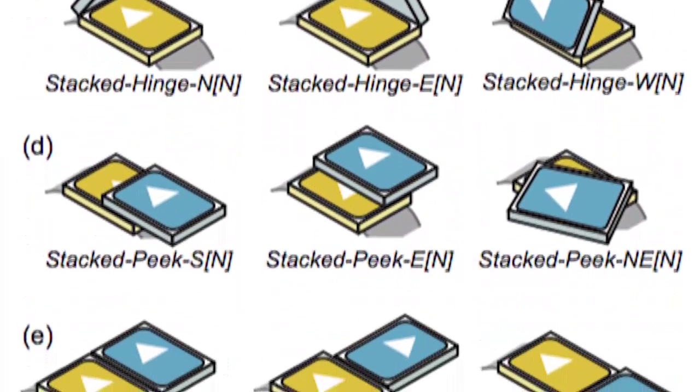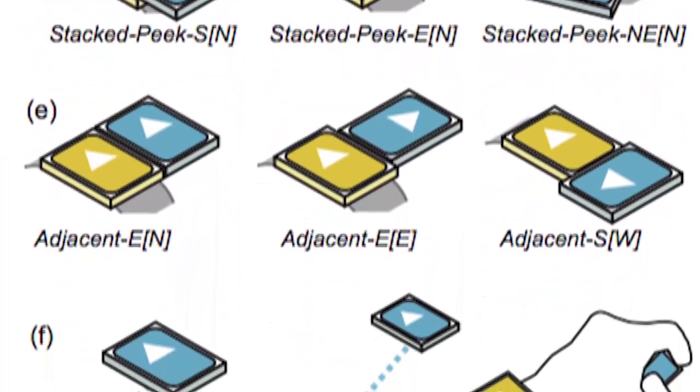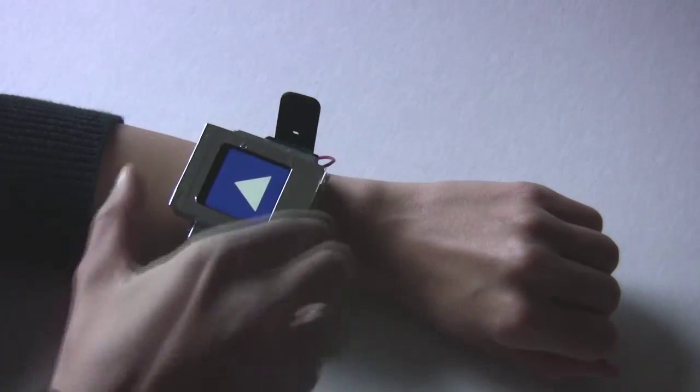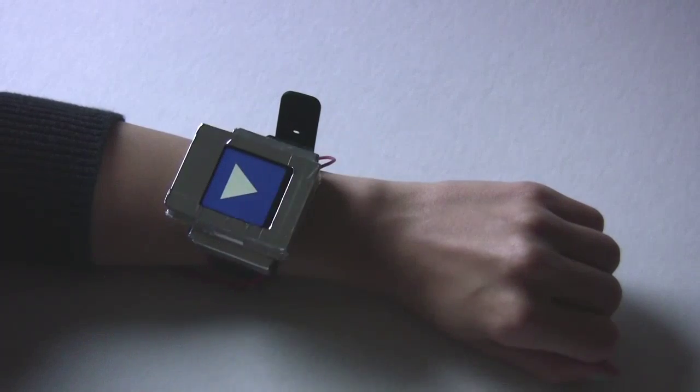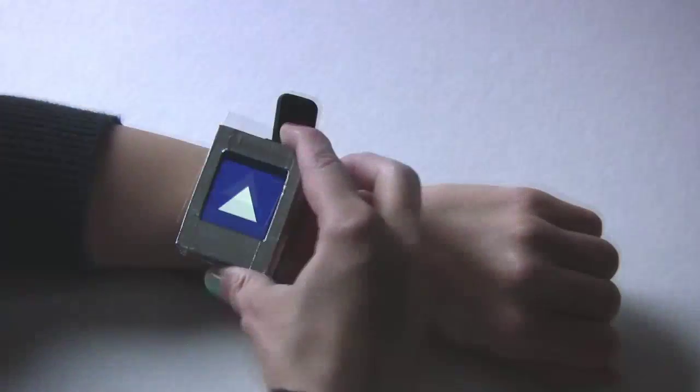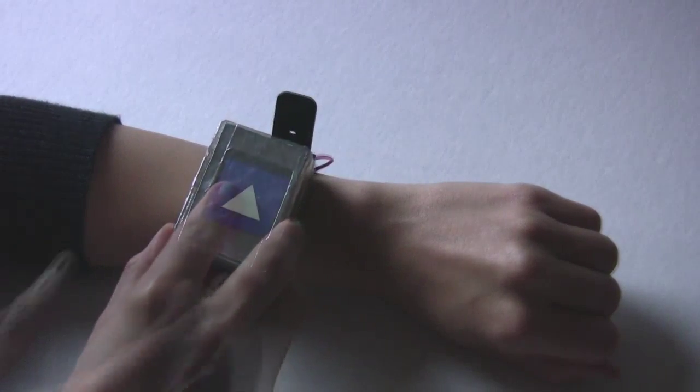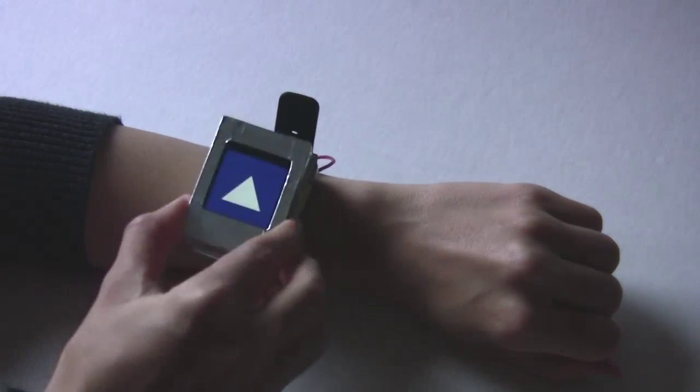The orientation and attachment locations of the top creates a very large design space of configurations. For example, the top can be stacked on the base in four different directions, or the top can be closed, or the top can be tilted up in a hinge motion along the four edges to see the base.